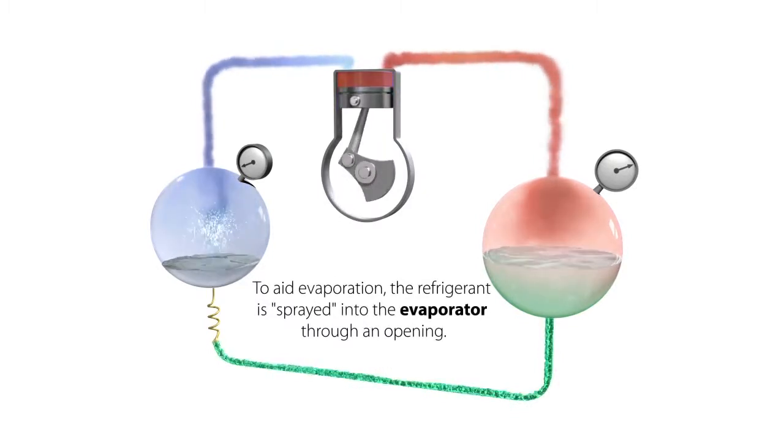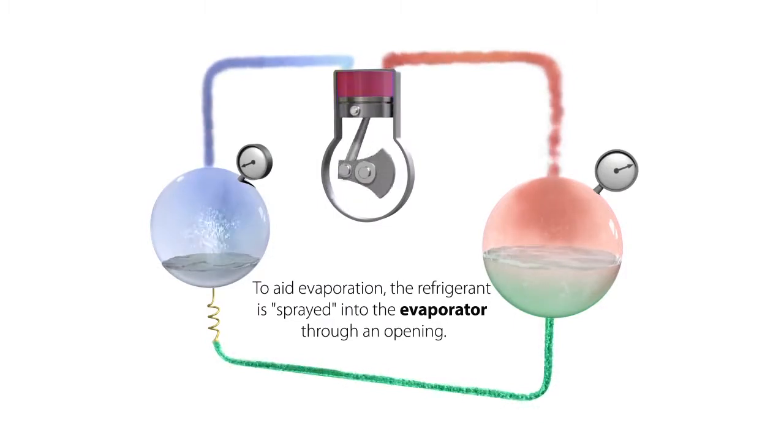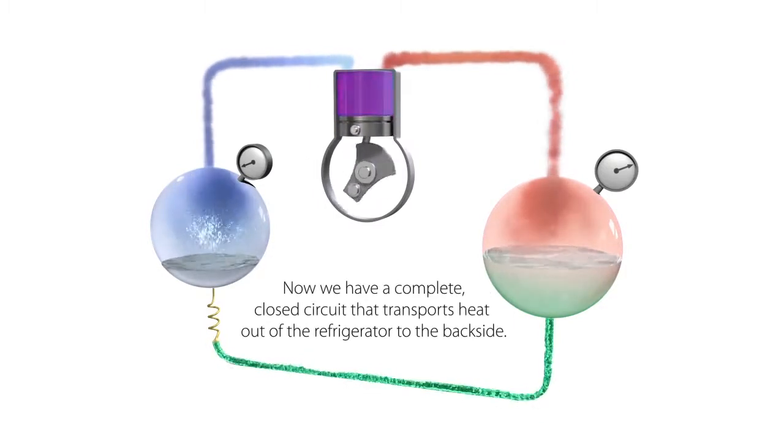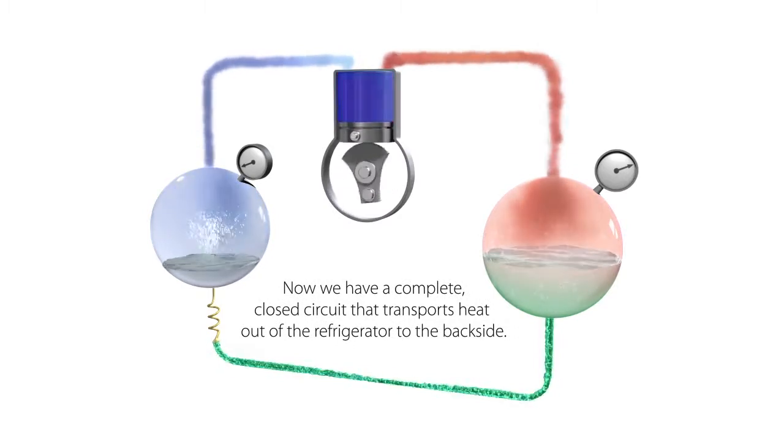To aid evaporation, the refrigerant is sprayed into the evaporator through an opening. Now we have a complete closed circuit that transports heat out of the refrigerator to the backside.